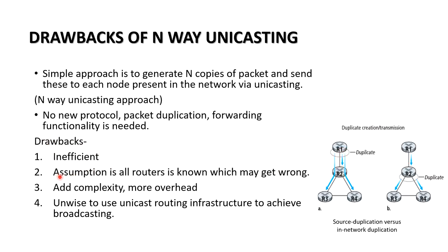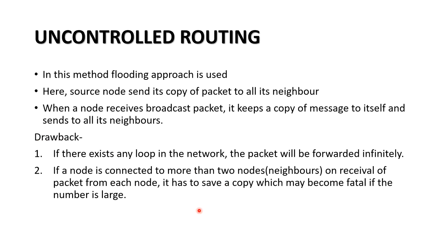The drawbacks of n-way unicasting are: it is inefficient, and it assumes that all router link states are known, which may not be the case in reality. Because of this, there is huge complexity due to overhead — we have to save information about all routers in one router. For these reasons, it is unwise to use a unicast routing infrastructure to achieve broadcasting.